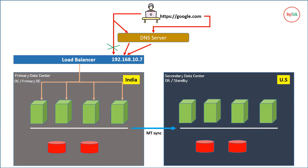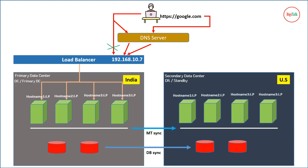Our primary data center is getting updated each and every day, hour, and second — business transactions, data, configurations, and everything. Since DR is used in case of disasters, whatever data is in your primary data center, whatever updates to software and applications you are performing, whatever data is getting updated in your database — all of it has to be replicated in real time in your DR as well. There are two parts: software replication is called MT sync (middle tier sync), and data replication is called database sync. Different technologies and software are available for MT and DB sync between DC and DR. In DC and DR we have multiple hosts with corresponding host names.